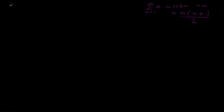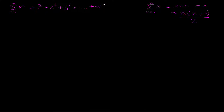In this exercise today we want to ask the question: can we find the sum of squares of first n natural numbers? That is, the sum of k² for k from 1 to n, which means 1² plus 2² plus 3², and if you keep on adding until the nth term, n², what is this expression going to be?